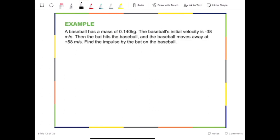Let us look at another example. A baseball has a mass of 0.140 kg. The baseball's initial velocity is negative 38 meters per second. Then the bat hits the baseball, and the baseball moves away at positive 58 meters per second. Find the impulse by the bat on the baseball. Again, the concept behind this problem is clear, which is about impulse.